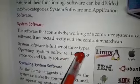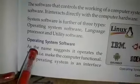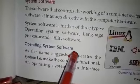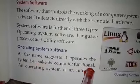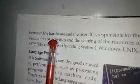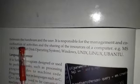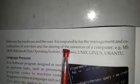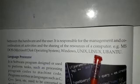System software is further of three types: operating system software, language processor and utility software. System software तीन तरह के होते हैं: operating system software, language processor software and utility software. Now comes to operating system software. As the name suggests, it operates the system, that is, makes the computer functional. An operating system is an interface between the hardware and the users. It is responsible for the management and coordination of activities and the sharing of the resources of a computer. For example, MS-DOS, Windows, Unix, Linux, Ubuntu.